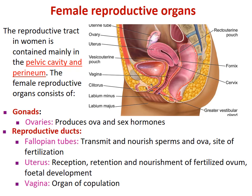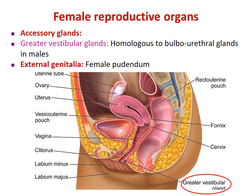The uterus is for the reception, retention, and nourishment of the fertilized ovum and fetal development. The fertilized ovum — the zygote — travels through the fallopian tube and comes into the uterine cavity, where it is embedded in the wall of the uterus. The whole of fetal development occurs in the uterus. Then comes the vagina, the organ of copulation where semen is delivered. These are the female reproductive organs, and this slide also discusses accessory supporting glands.